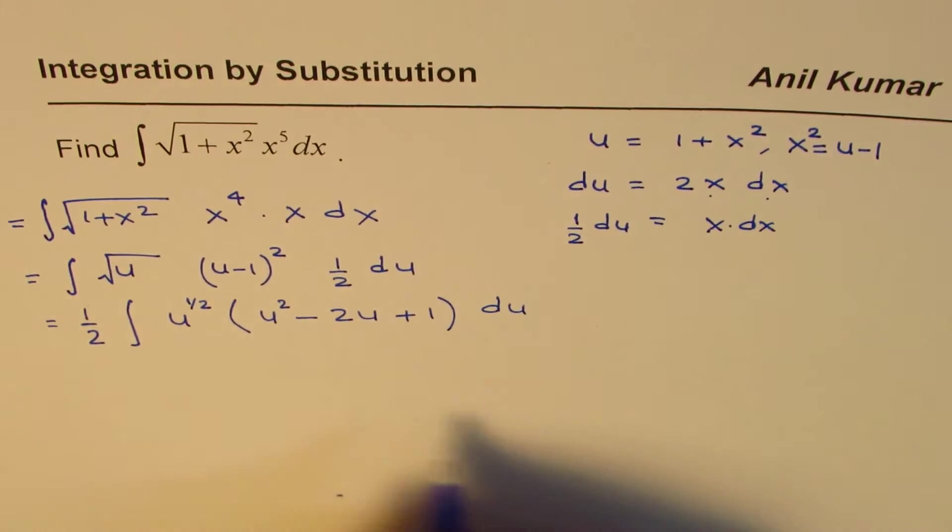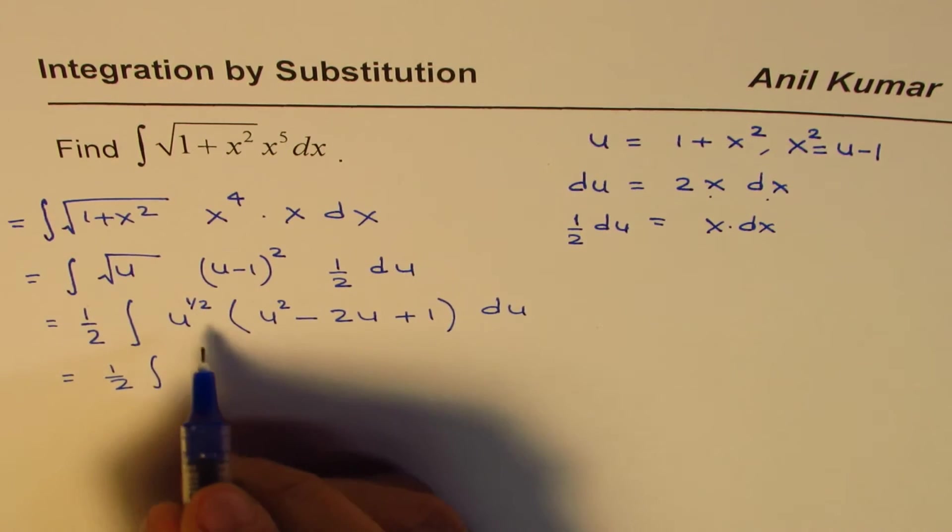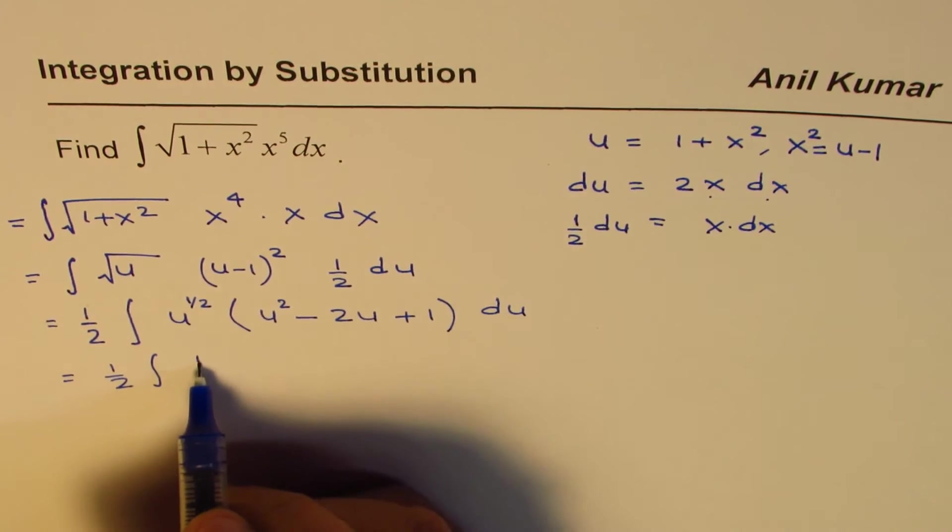So that's what we have, and if I expand it, I get half integral of u to the power of half times u squared.